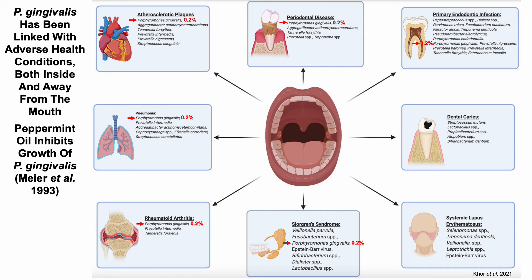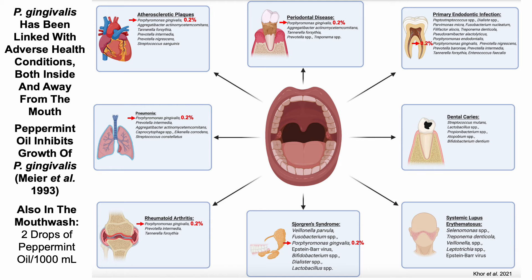One reason for low P. gingivalis levels may be peppermint oil in the mouthwash. According to Meyer et al. 1993 — linked in the video description — peppermint oil inhibits the growth of P. gingivalis. I add two drops of peppermint oil per liter to the mouthwash. Whether that amount is optimal or causing the low levels, I don't know, but there is a correlation.